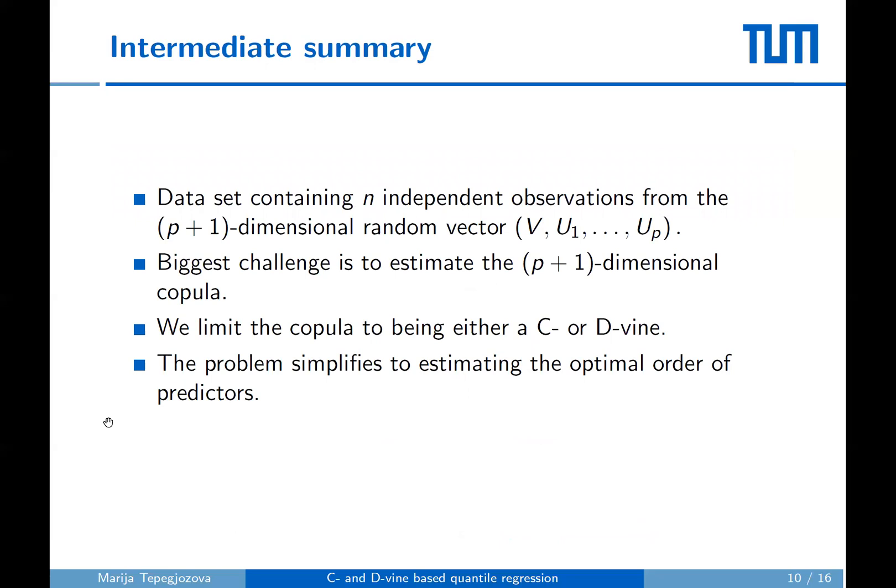Now a short intermediate summary about what we talked about till now. We start with a dataset containing n independent observations from the random vector V, U1 to Up. We assume the data is already on the p+1 dimensional hypercube. Otherwise, we simply use the probability integral transform to go from the original scale to the hypercube whenever needed. Our goal is to derive a quantile regression model for the given data using copulas. And to do so, the biggest challenge remains estimating the p+1 dimensional copula. In order to reduce computational complexity, we restrict the copula function to the previously introduced C and D-vine copulas.